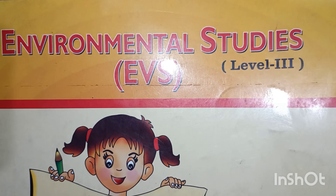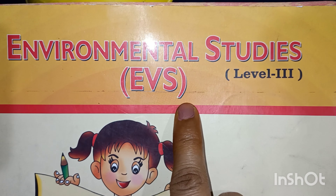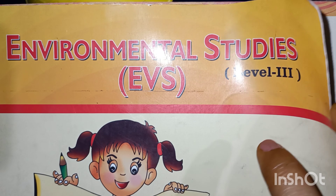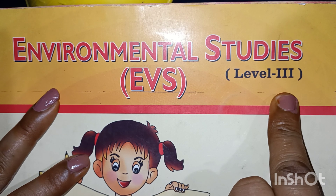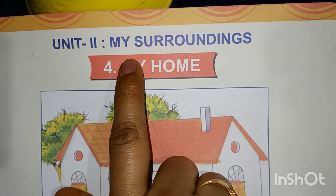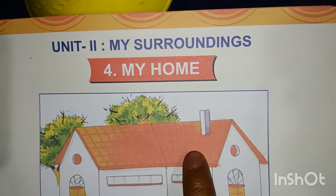Hello kids, a very warm welcome to all of you at Basmuthay School, Kusum Bihar. This will be part 2 of our EVS class. In this part we will study unit 2 of environmental studies for level 3 UKG. Unit 2 is called 'My Surroundings.' Surroundings means the things which are nearby your house, nearby you — that is your surroundings.